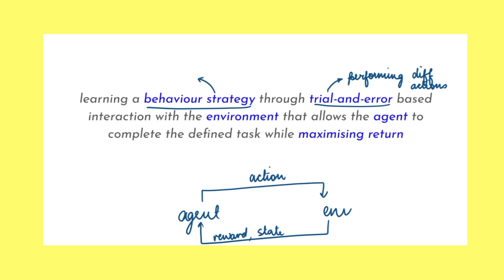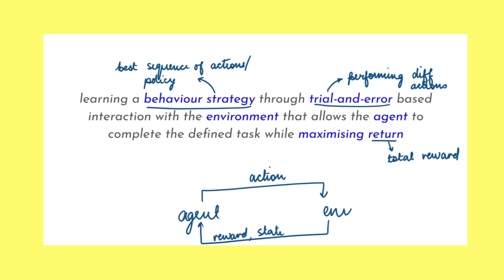The goal of the agent then is to learn the best sequence of actions that must be taken — that is, the behavior strategy, or more formally referred to as the policy — to complete the given task. The metric to determine how good a policy is, is based on the total reward obtained from following the policy, referred to as the return. Thus, the agent must find the policy that manages to accumulate the highest total reward.